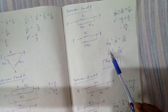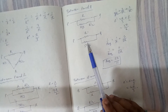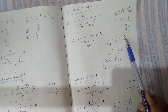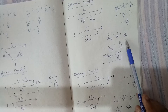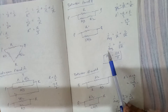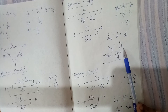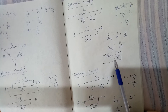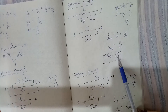So the next diagram has R and five R by six in parallel. One by R equivalent equals one by R plus six by five R, giving eleven by five R. Therefore R equivalent between P and Q equals five R by eleven.